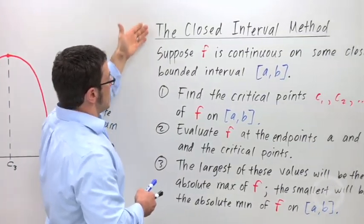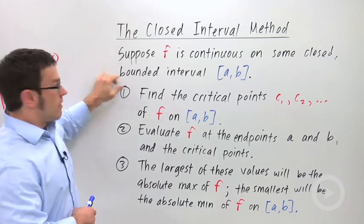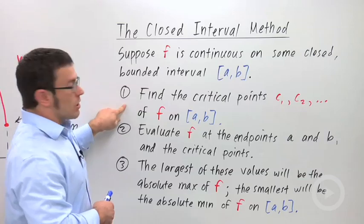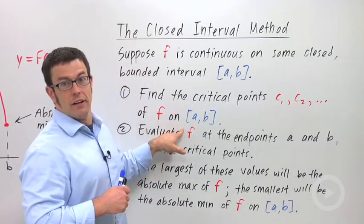Here's the closed interval method all spelled out. Suppose f is a continuous function on some closed bounded interval AB. Find the critical points—that's the first step. Find all the critical points for the function f on that interval.